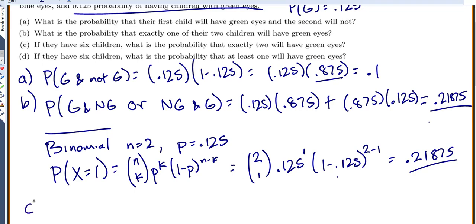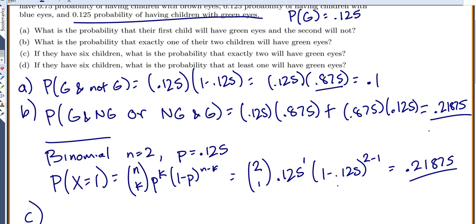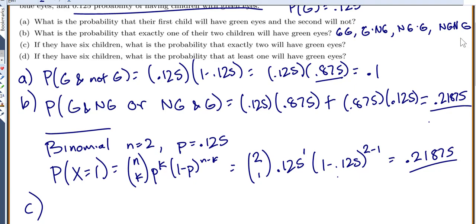Part B is easier to do by hand with basic probability rules, but part C is not, because it asks: if they have six children, what's the probability that exactly two will have green eyes? For two children, I can draw a tree diagram easily — there are only four possibilities: green/green, green/not green, not green/green, not green/not green. But for six kids there are a lot of possibilities, so I have to use the binomial distribution.